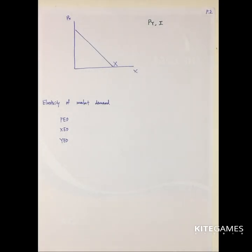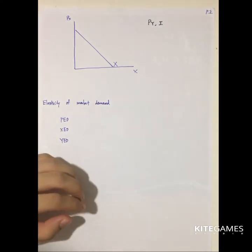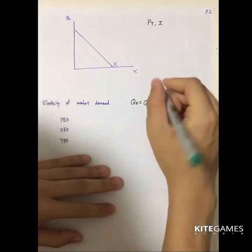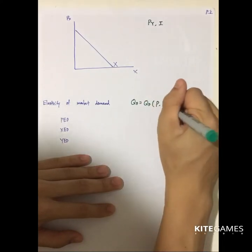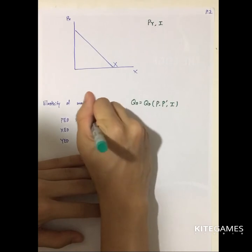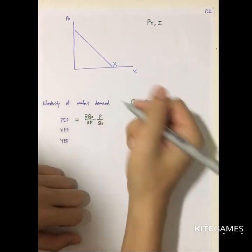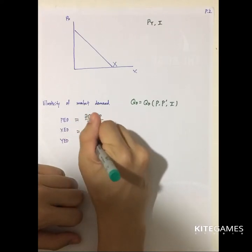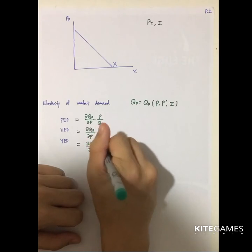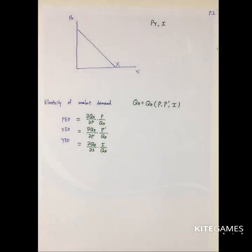Just as with individual demand functions, there are three elasticity concepts for market demand. The price elasticity of demand is (∂Qd/∂P) × (P/Qd). The cross-price elasticity is (∂Qd/∂P') × (P'/Qd). The income elasticity is (∂Qd/∂I) × (I/Qd). Nothing changes conceptually — you simply replace individual demand with total market demand.